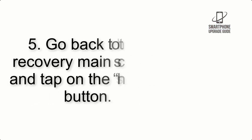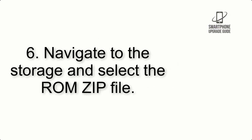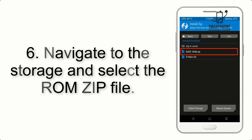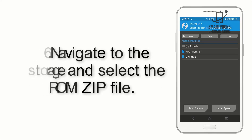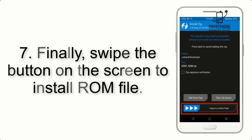Step 4: Swipe the button to wipe the device. Step 5: Go back to the recovery main screen and tap on the Install button. Step 6: Navigate to the storage and select the ROM zip file.